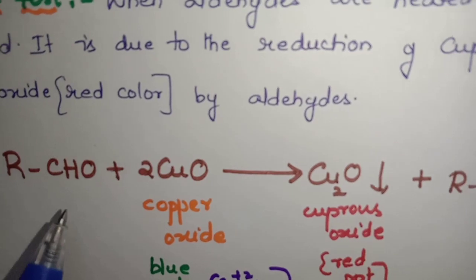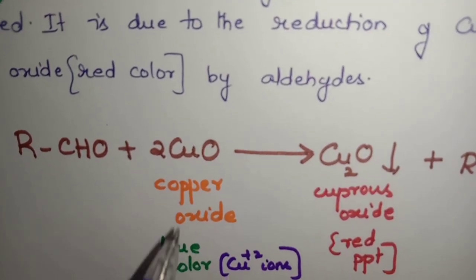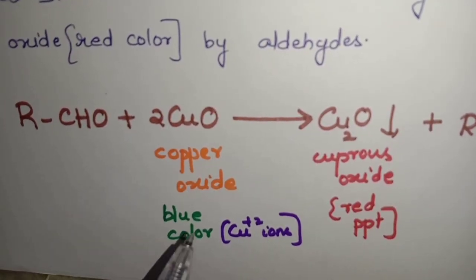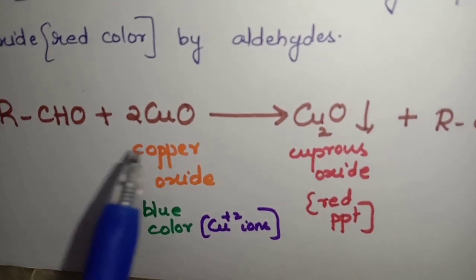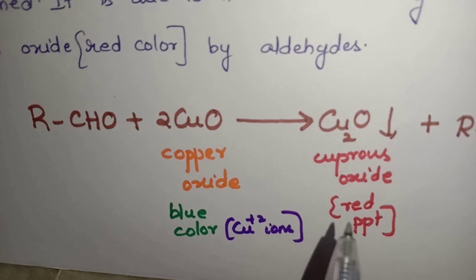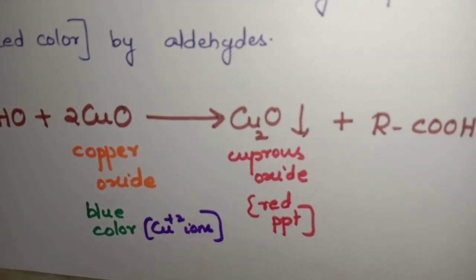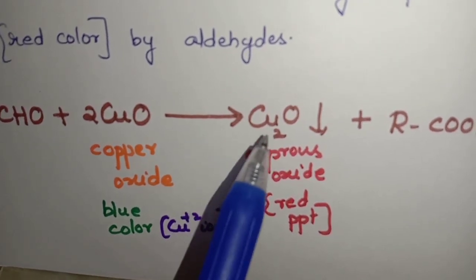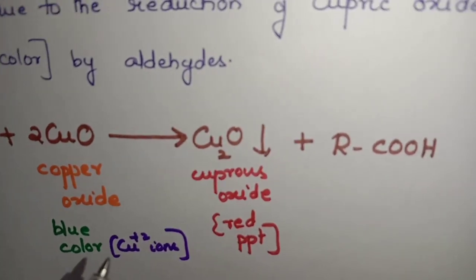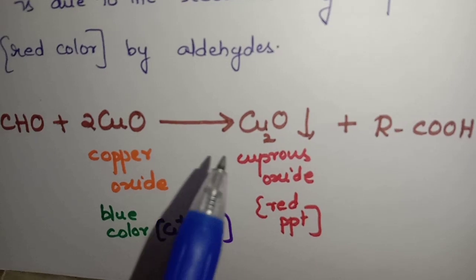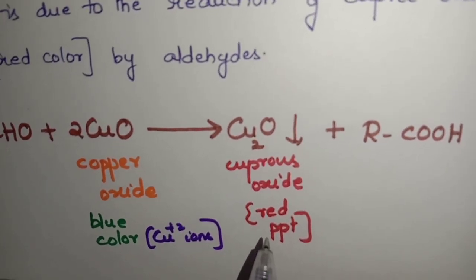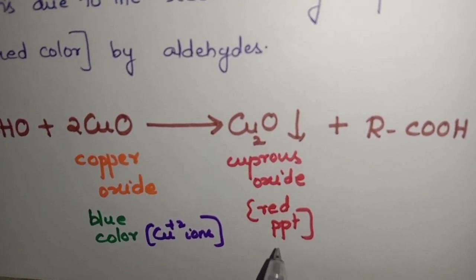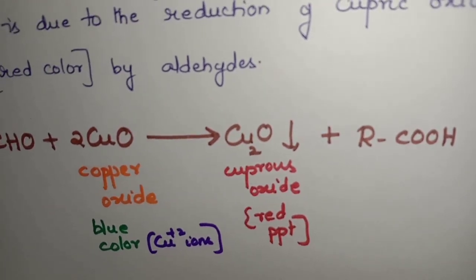Look at the reaction. RCHO aldehyde plus 2CuO, that is copper oxide. Here I have written blue color of copper ions. This will be in the color blue, and when it is heated with the aldehyde it is changing into cuprous oxide. Here Cu has +2 oxidation state, but Cu2O means Cu has +1 oxidation state, meaning it is being reduced to cuprous oxide, whereas its color is red color. So many textbooks you find it as reddish brown. I have written it as red color precipitate plus RCOOH.